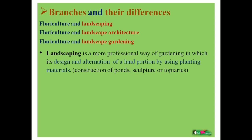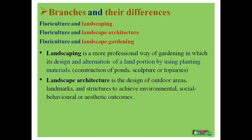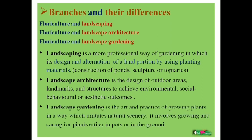In landscaping, we make a design and with the help of that design we alter the land portion using different planting materials. In landscape architecture, an architectural mind is used to make social or professional areas beautiful using different planting materials. And landscape gardening means we are making a simple decorative garden at our home.